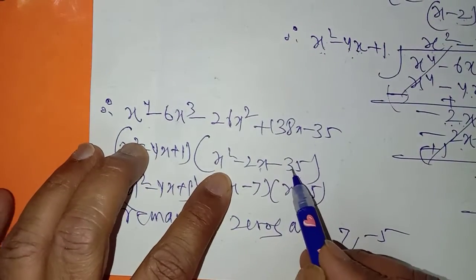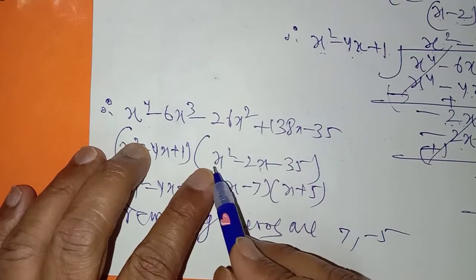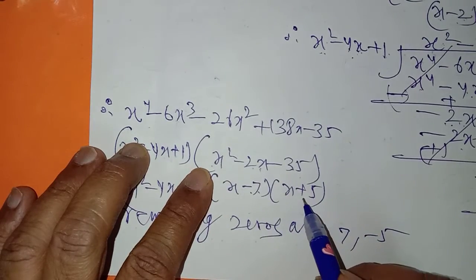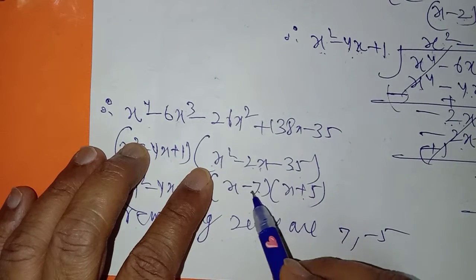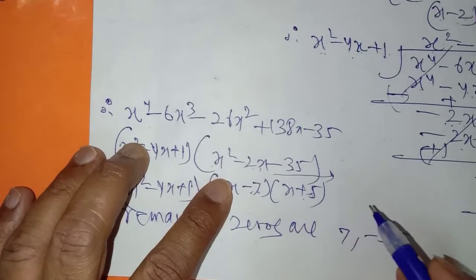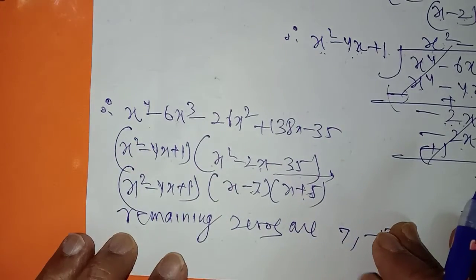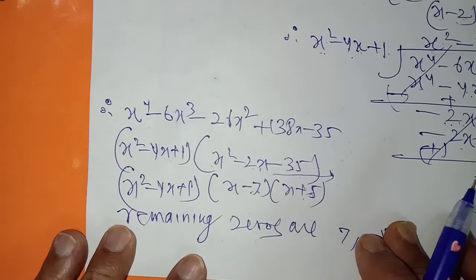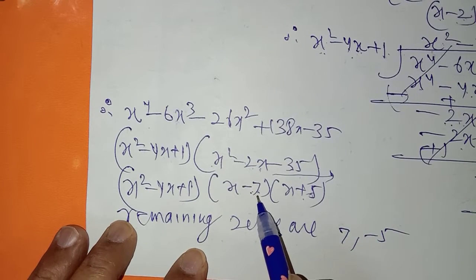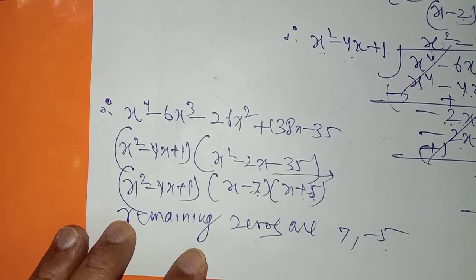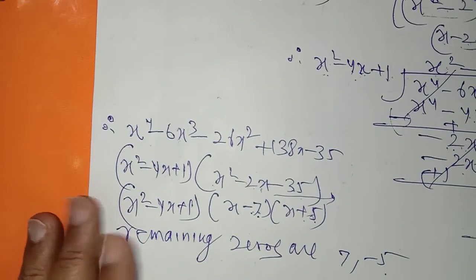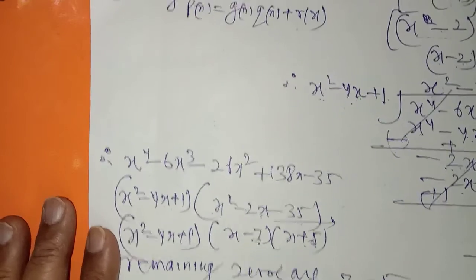اب اس quotient polynomial کے factors کرنے ہیں۔ multiply کرنے پر minus 35 اور subtract کرنے پر minus 2 — تو 7 اور 5 ہیں۔ Splitting the middle term کر کے factorize کریں — you know how to factorize by splitting the middle term۔ تو remaining zeros آ گئے: 7 اور minus 5۔ تو میں نے question number 3 سے related ایک example لے لیا۔